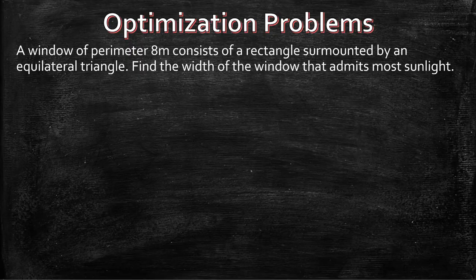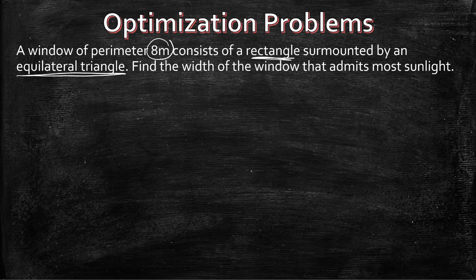We're going to be solving another optimization problem. This one reads that a window of perimeter 8 meters consists of a rectangle surmounted by an equilateral triangle. So automatically you know that there are two shapes that you have to work with. Find the width of the window that admits the most sunlight.